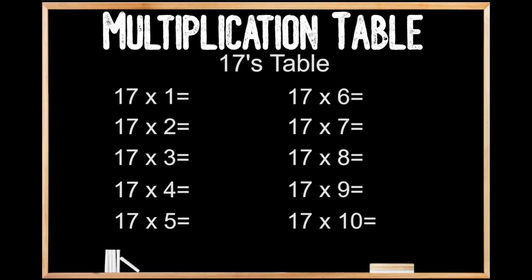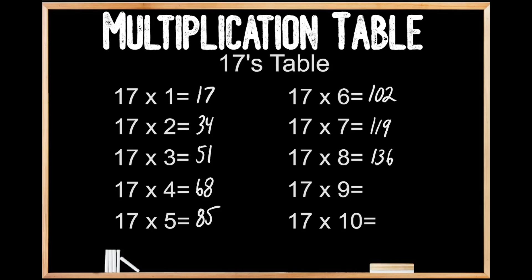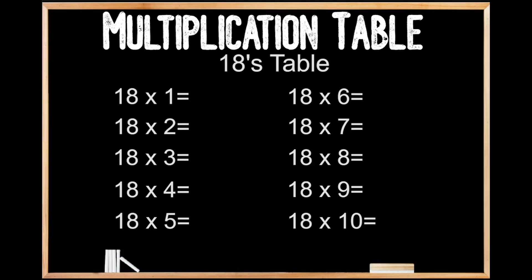17's table. 17 times 1 is 17. 17 times 2 is 34. 17 times 3 is 51. 17 times 4 is 68. 17 times 5 is 85. 17 times 6 is 102. 17 times 7 is 119. 17 times 8 is 136. 17 times 9 is 153. And 17 times 10 is 170.